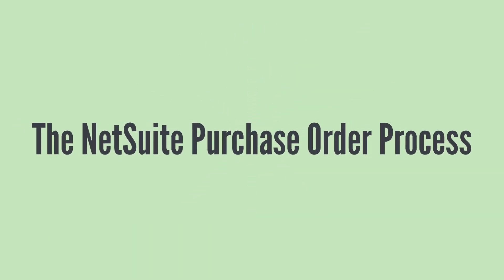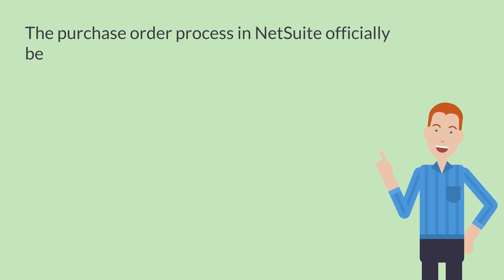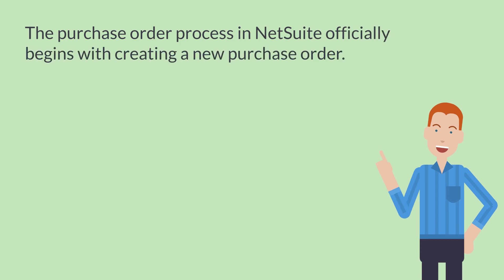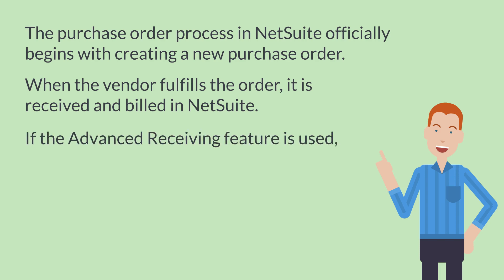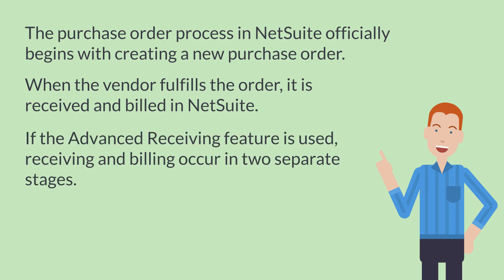What is the NetSuite purchase order process? Once you have enabled this feature and set up your preferences, the purchase order process in NetSuite officially begins with creating a new purchase order. Then, when your vendor fulfills your order, you will receive and bill the order in NetSuite. If you use the Advanced Receiving feature, receiving and billing the purchase order will take place in two separate stages. For this overview, we'll operate under the assumption that you are using only the basic purchase order feature.